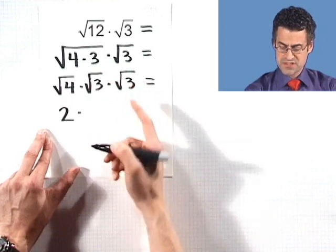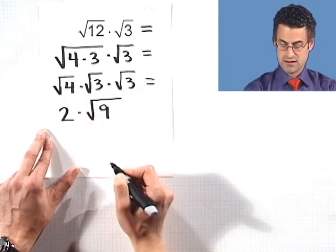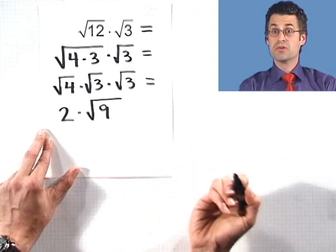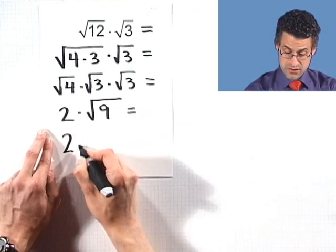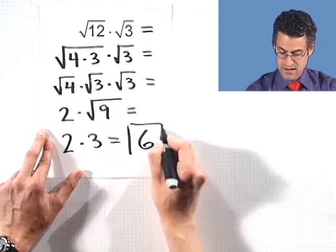But the square root of 4 is 2. And the square root of 3 times the square root of 3, that's the square root of 3 times 3, which is 9. But wait, the square root of 9 is just 3. So in fact, this is just 2 times 3, which equals 6.